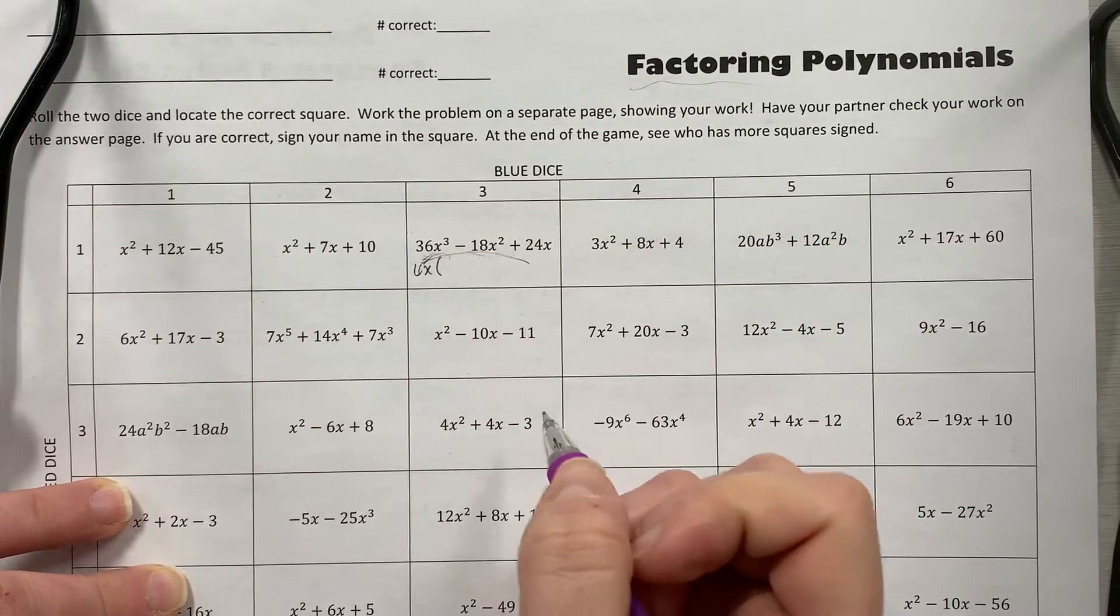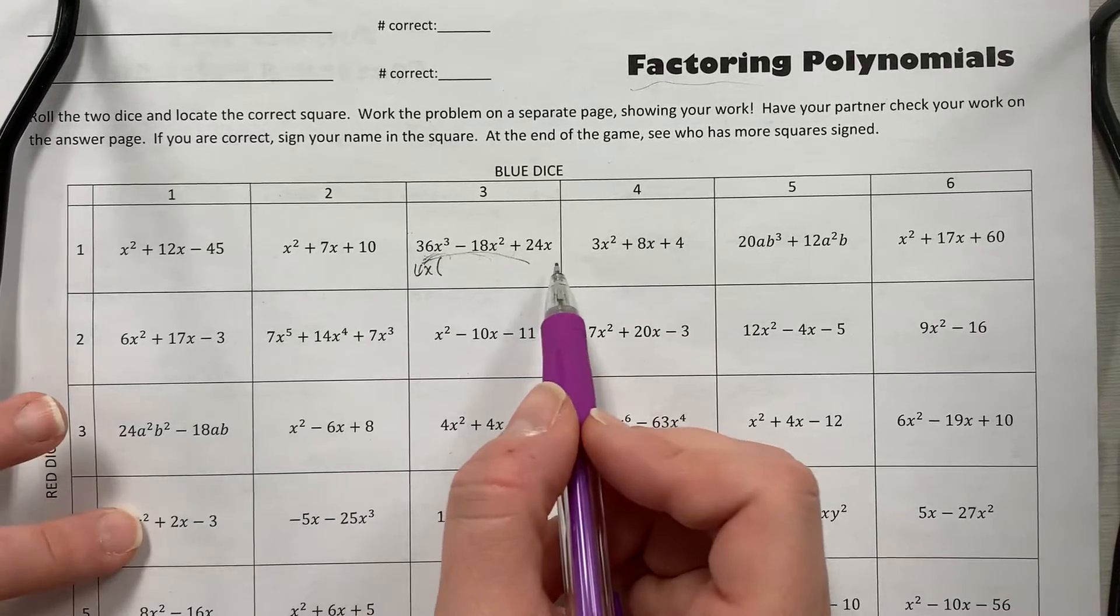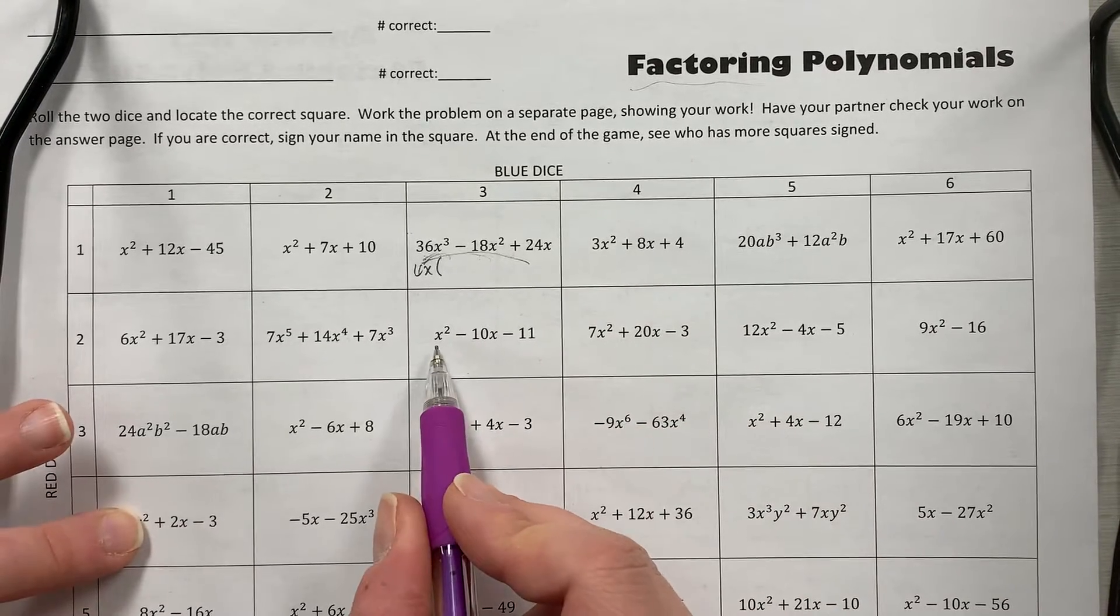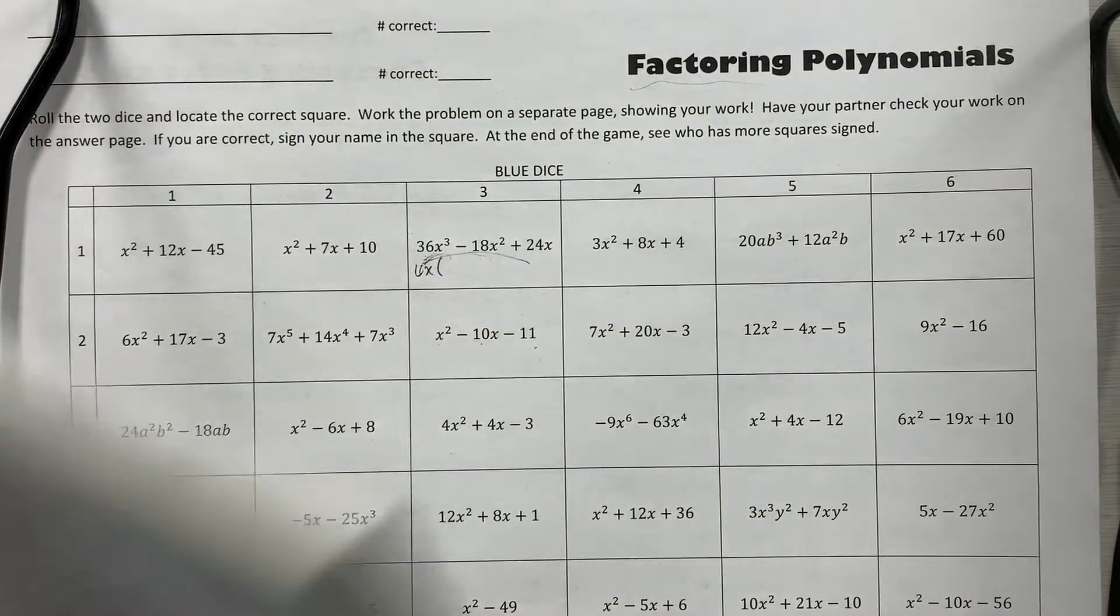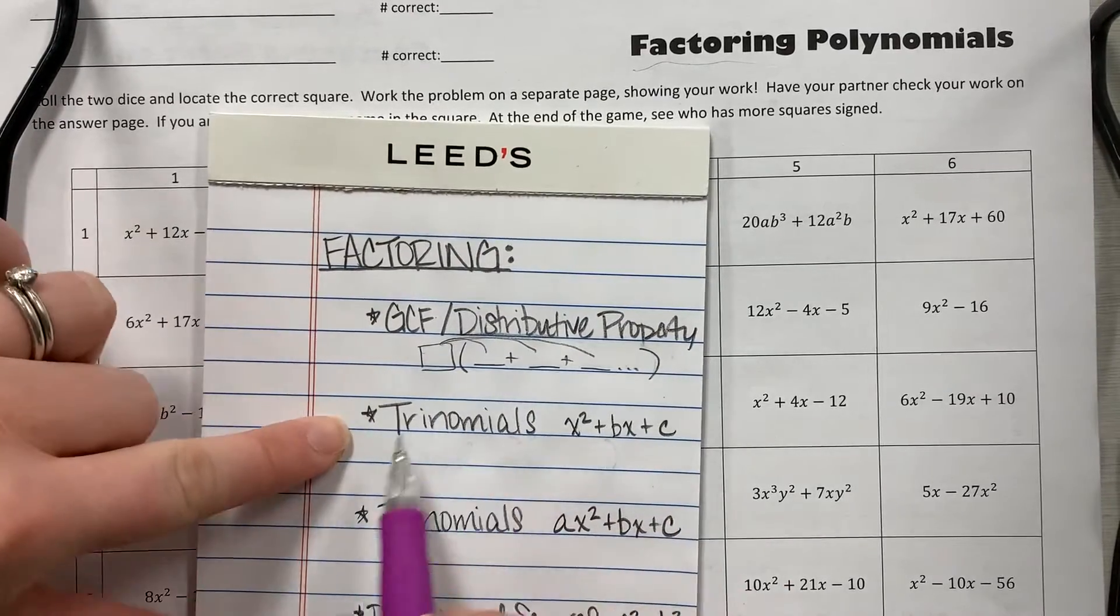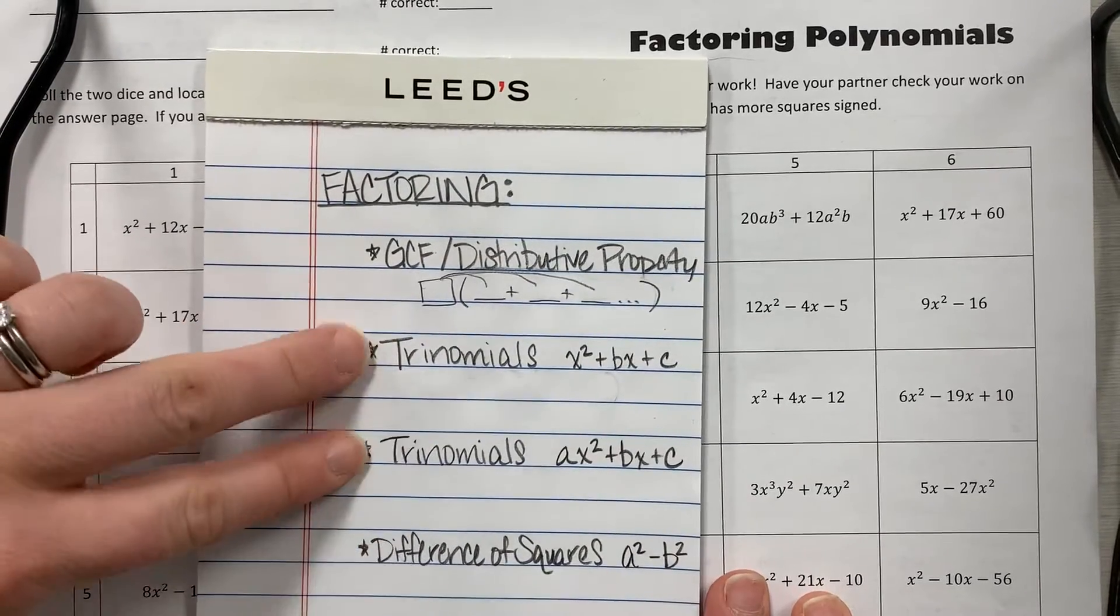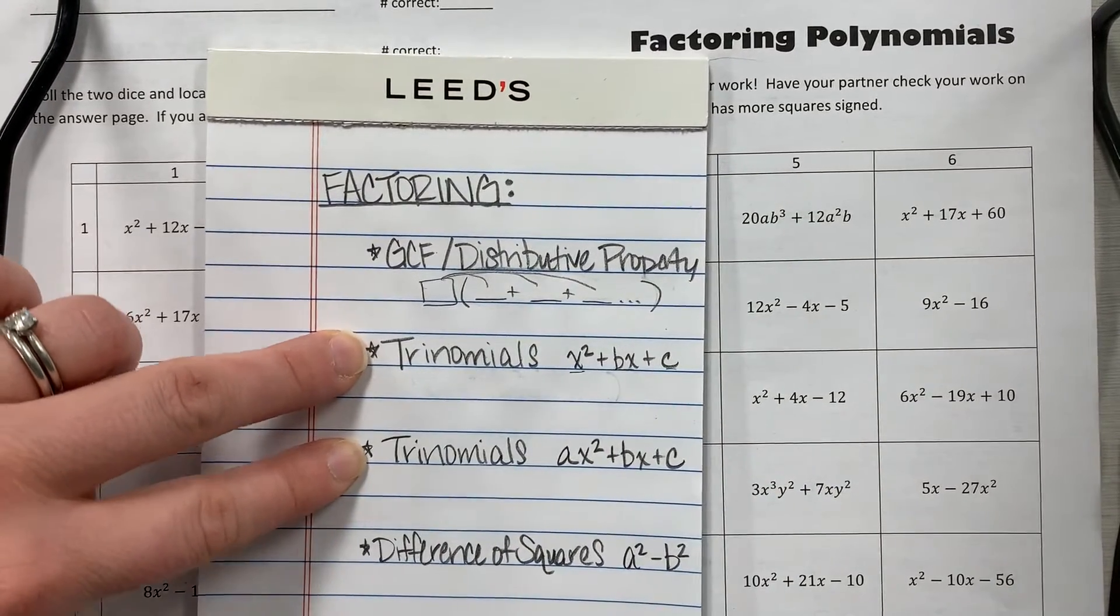So that's always what you want to check for first: do they have something in common all the way across? They won't always. Here I don't see a common factor all the way across, so if you don't see a common factor, that's the first thing you're going to check for. Then you're going to try and see, well, is it a trinomial? Does it have three simple pieces?